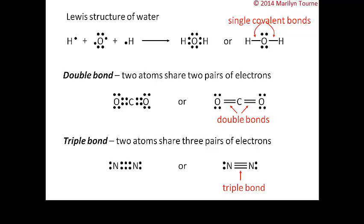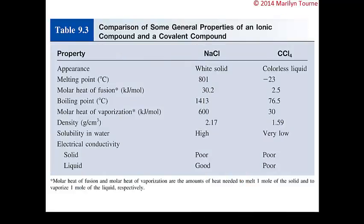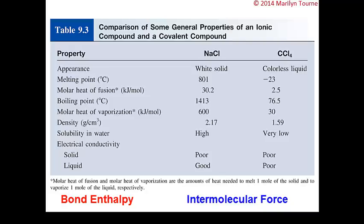Before writing Lewis structures, let's compare properties of covalent and ionic compounds. Ionic and covalent compounds differ greatly in their general physical properties because of the nature of their bonds. Covalent compounds have two types of attractive forces: bond enthalpy, which measures the force holding atoms together in a molecule, and intermolecular forces, which are much weaker. Because intermolecular forces are weak, covalent compounds are typically gases, liquids, or low-melting-point solids.